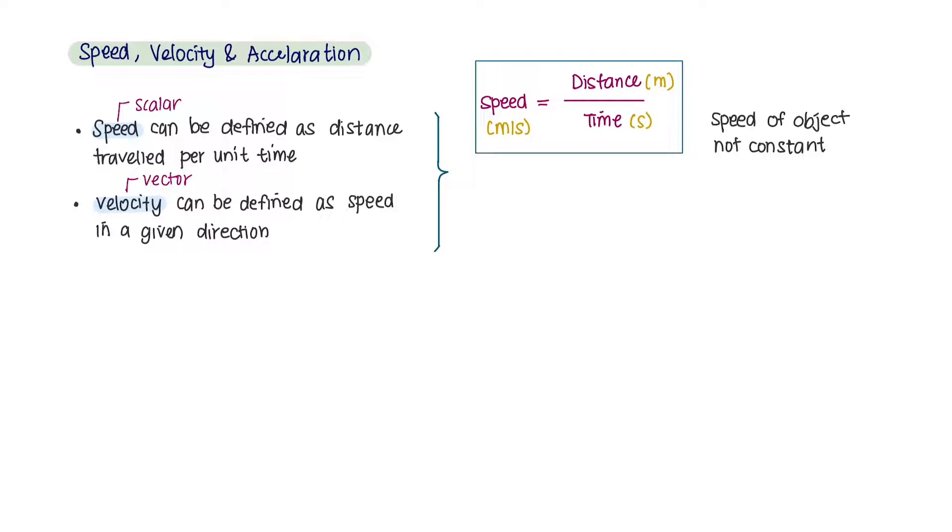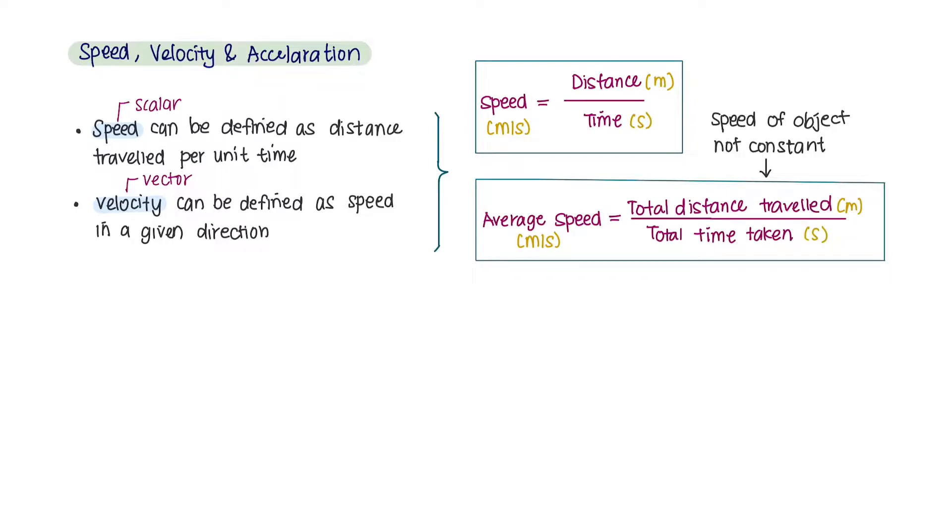For example, the object might be moving faster or slower. Therefore, the equation for calculating the average speed of an object is the total distance traveled over the total time taken.